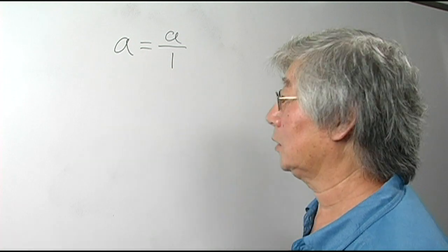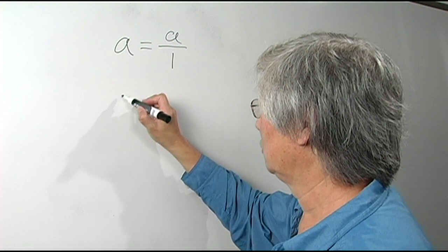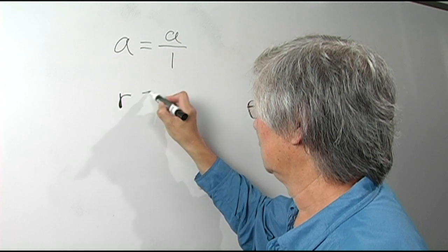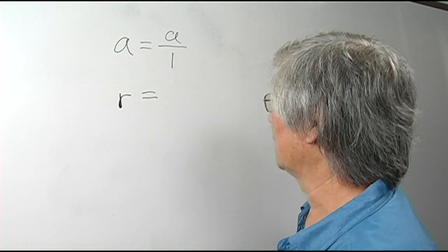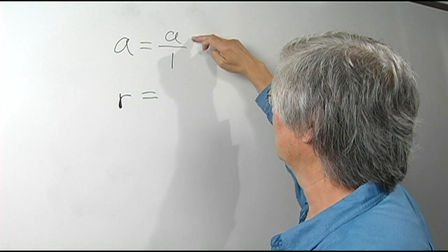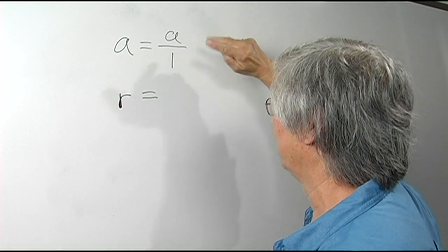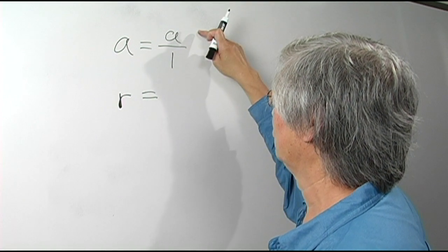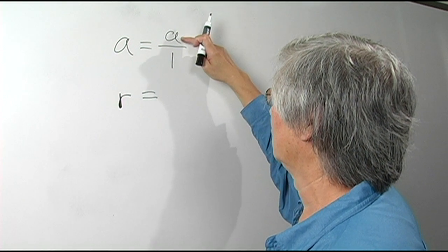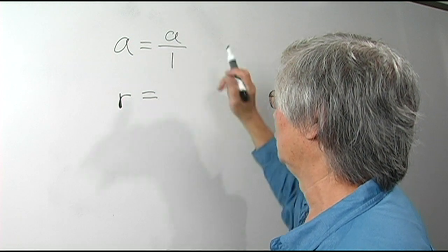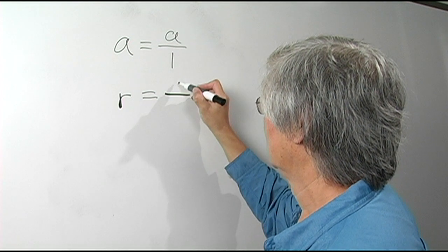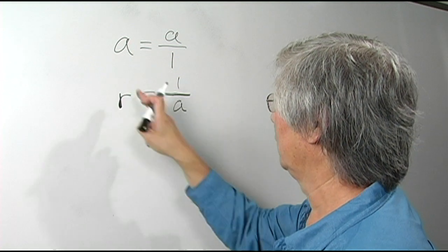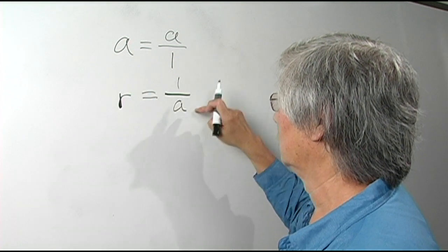Now, let's think about the reciprocal. You can think about this as taking the numerator and the denominator and flipping it upside down. So the denominator becomes the new numerator and the old numerator becomes the new denominator. Hence, the reciprocal of A is simply 1 over A.